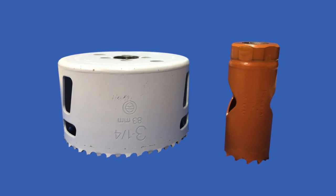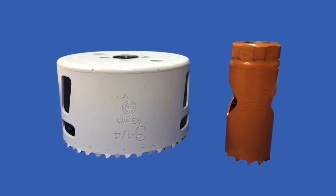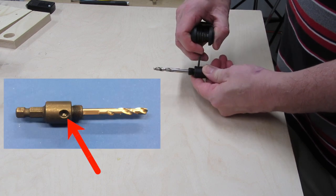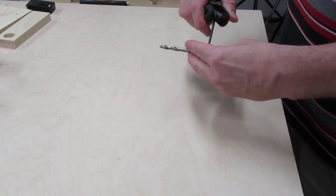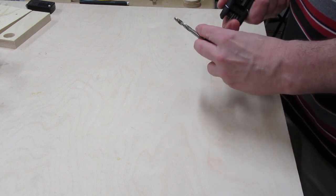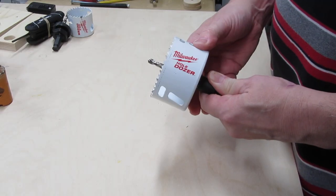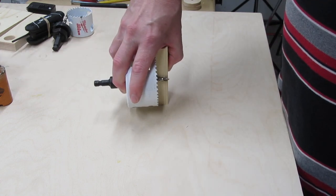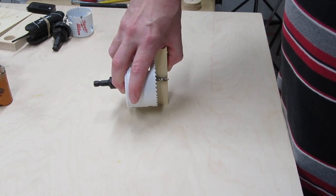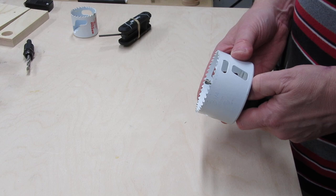Hole saws come in varying heights. Because of this, the pilot bit's height can be adjusted. There's one or more set screws that you loosen, then raise or lower the pilot bit, and tighten it back down. Or you can even replace the pilot bit if you need to. If the pilot bit is too long for the saw, it's not a big deal, as long as you don't let the pilot bit drill through something important. Obviously, if the pilot bit is so short that it doesn't reach past the hole saw, then you need to raise it.